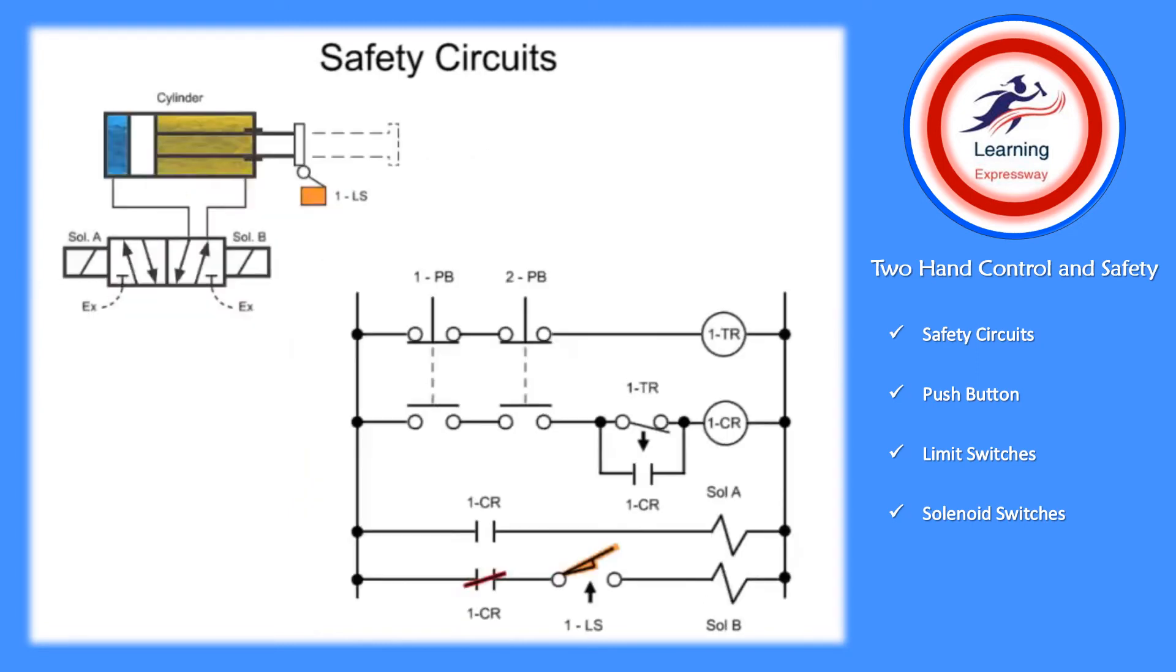Another way to prevent tie down is to utilize a double solenoid two position valve. The valve is much simpler and less expensive, but requires a more complex circuit utilizing an off-delay timing relay, normally open-timed open-timer contact, a control relay, two solenoids, and a normally closed limit switch.